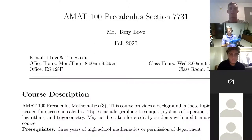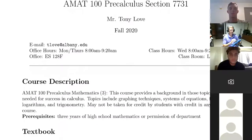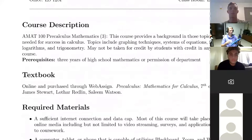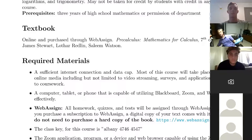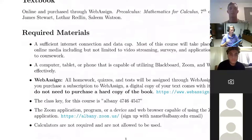We'll normally be meeting in Lecture Center 22 — it's a big room right around the fountain in the middle of campus; there are maps online. We'll skip the course description since you'll find out quickly — we'll cover systems of equations, functions, logarithms, trig, and similar topics. The textbook is purchased online through WebAssign and Cengage. A physical copy is unnecessary because it comes with your WebAssign subscription.